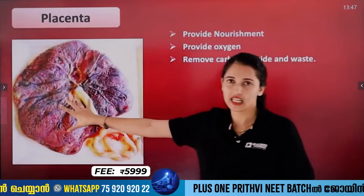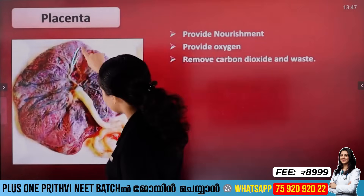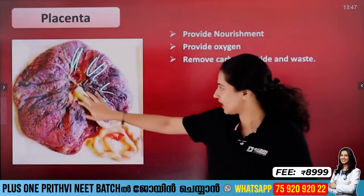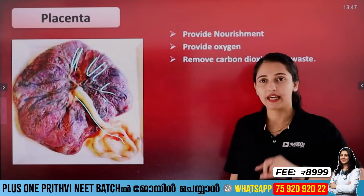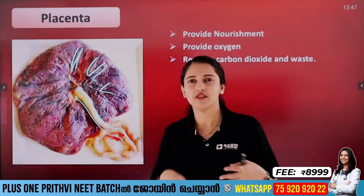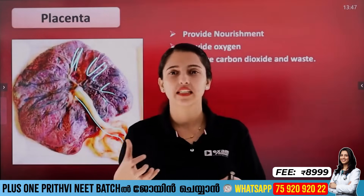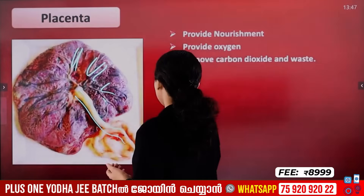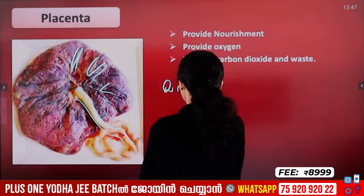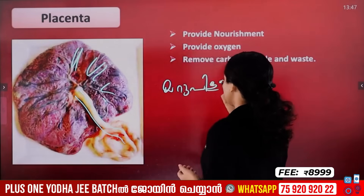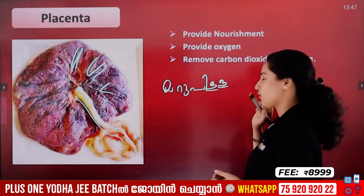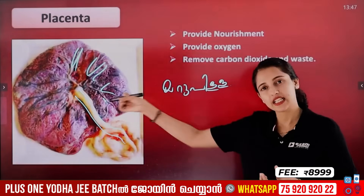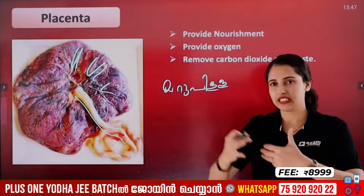The placenta contains finger-like structures called villi, and it is connected to the baby through the umbilical cord. When the baby is delivered, the placenta will detach from the uterus within about half an hour after delivery.